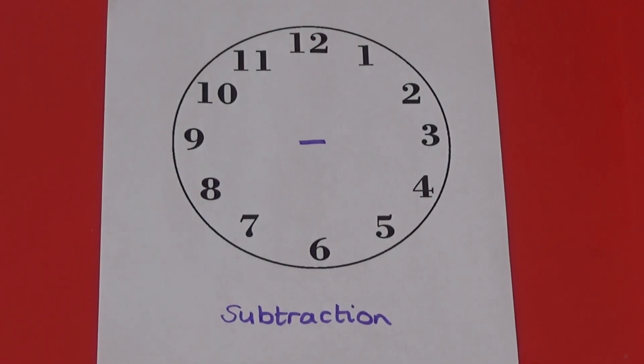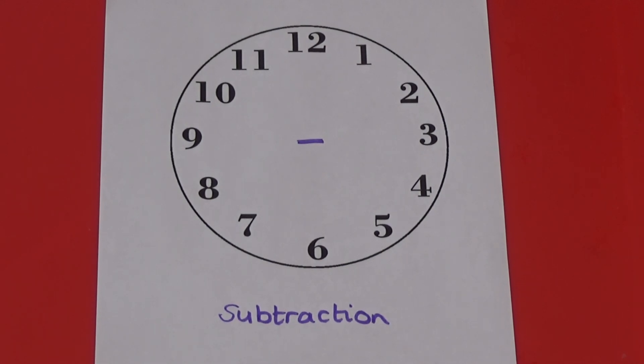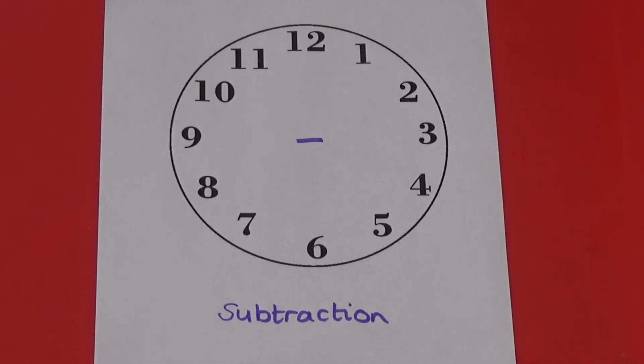For the first one I'm going to show you subtraction. If you subtract numbers opposite each other they will always equal six. I'm going to show you one here.